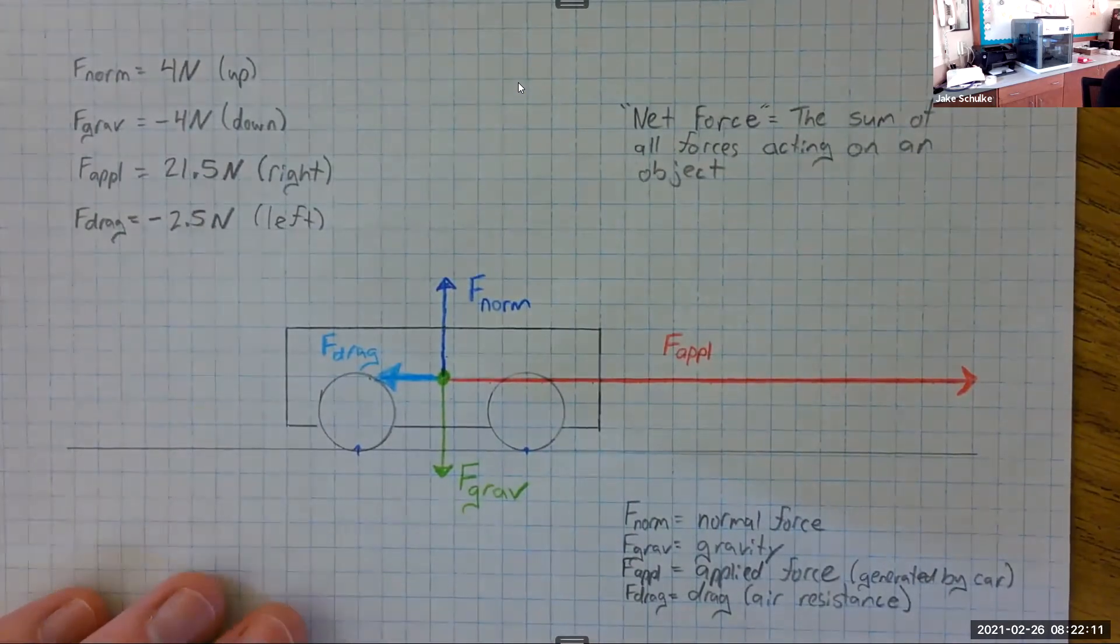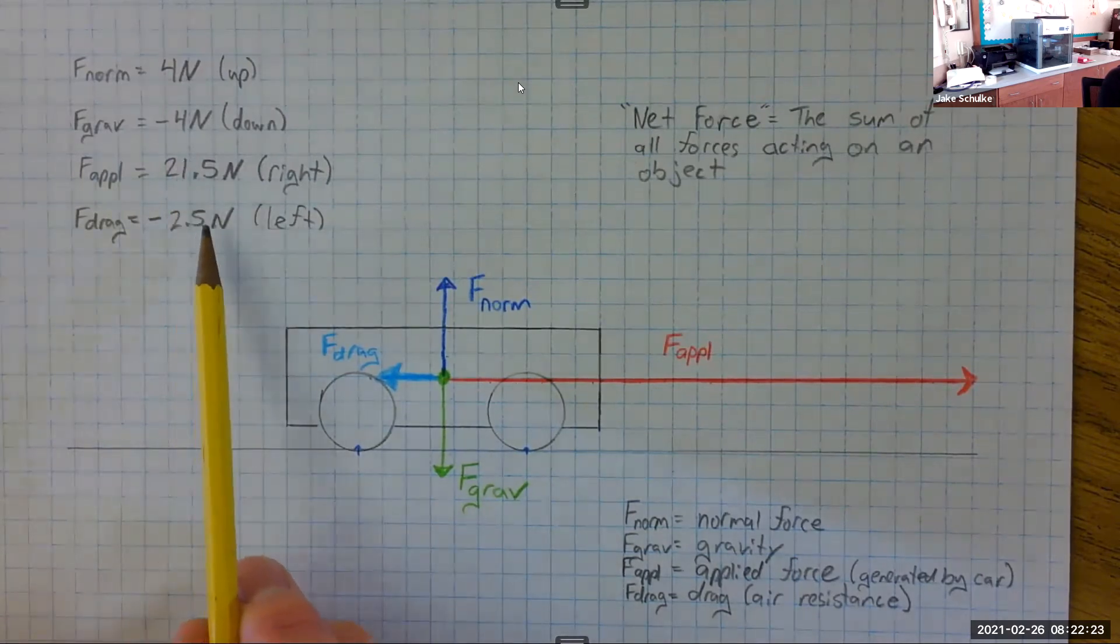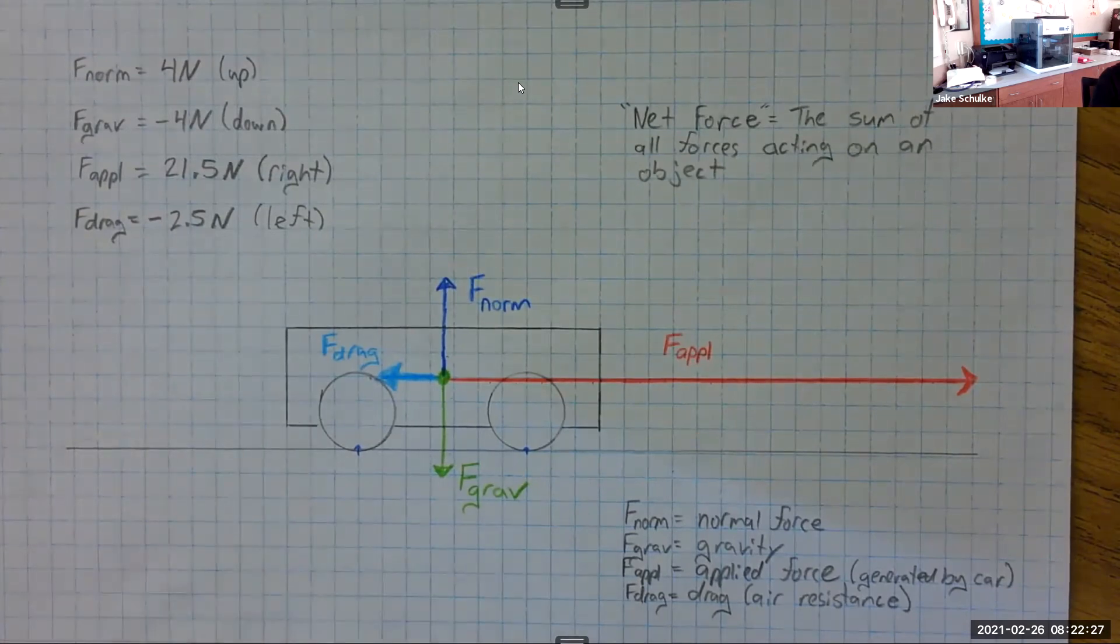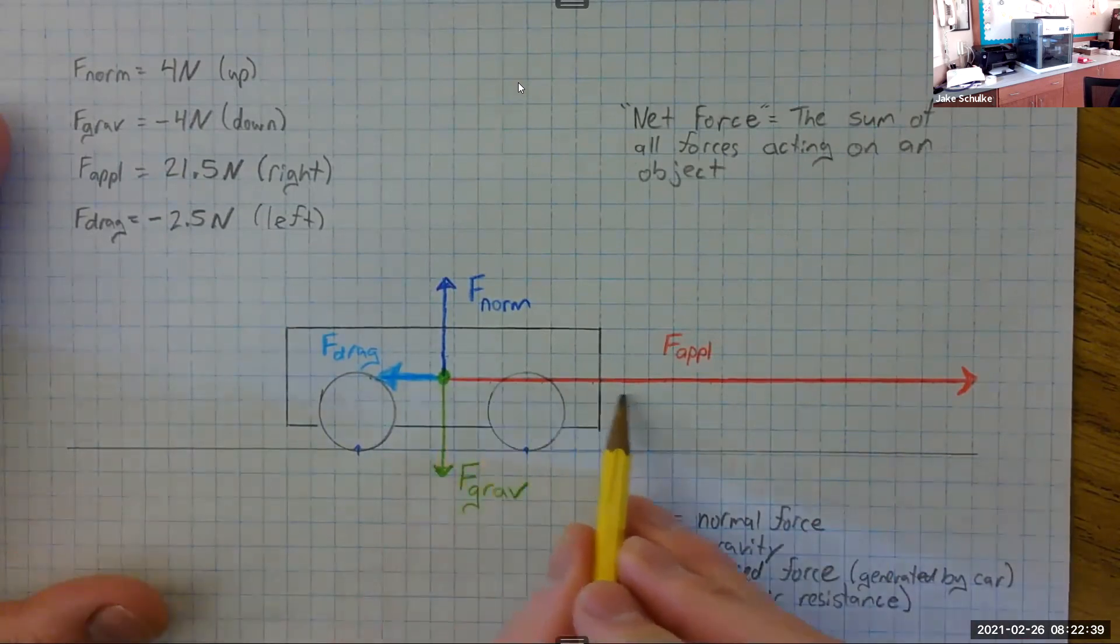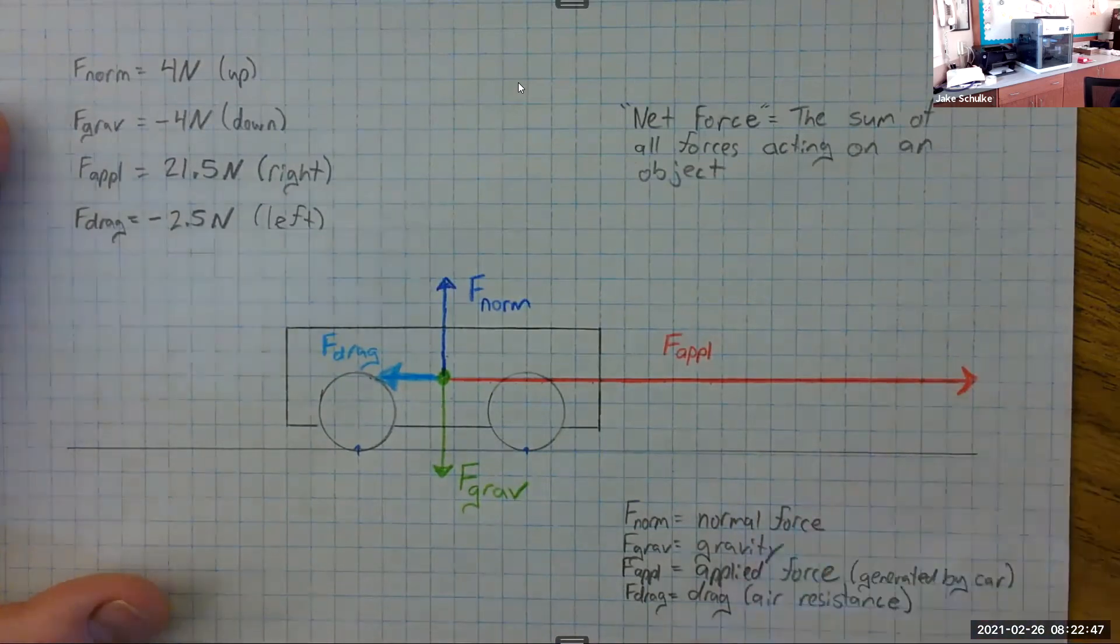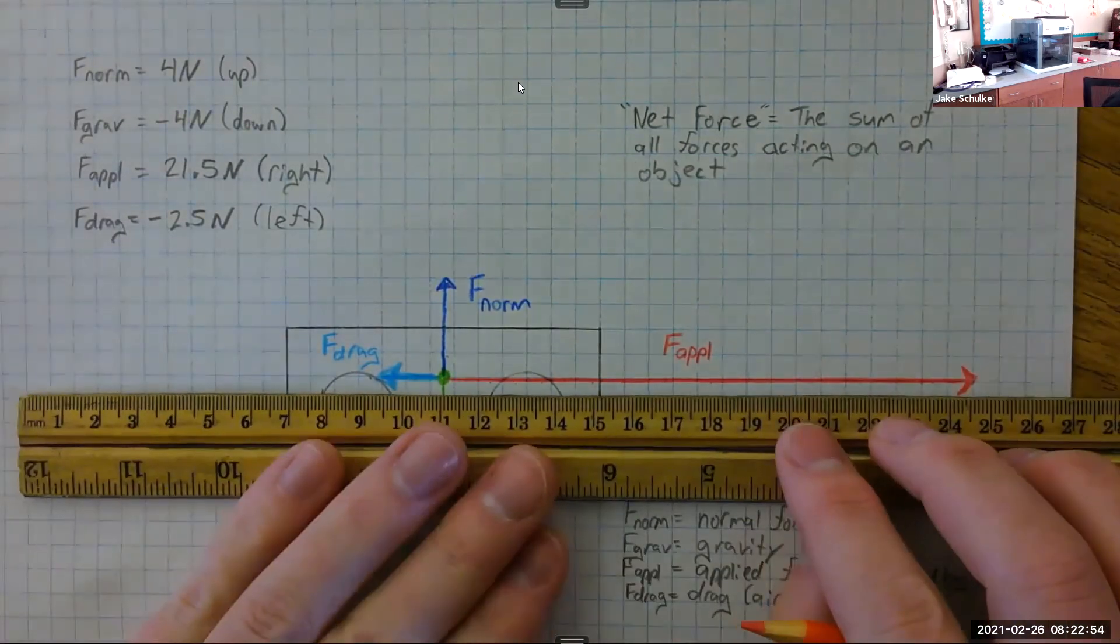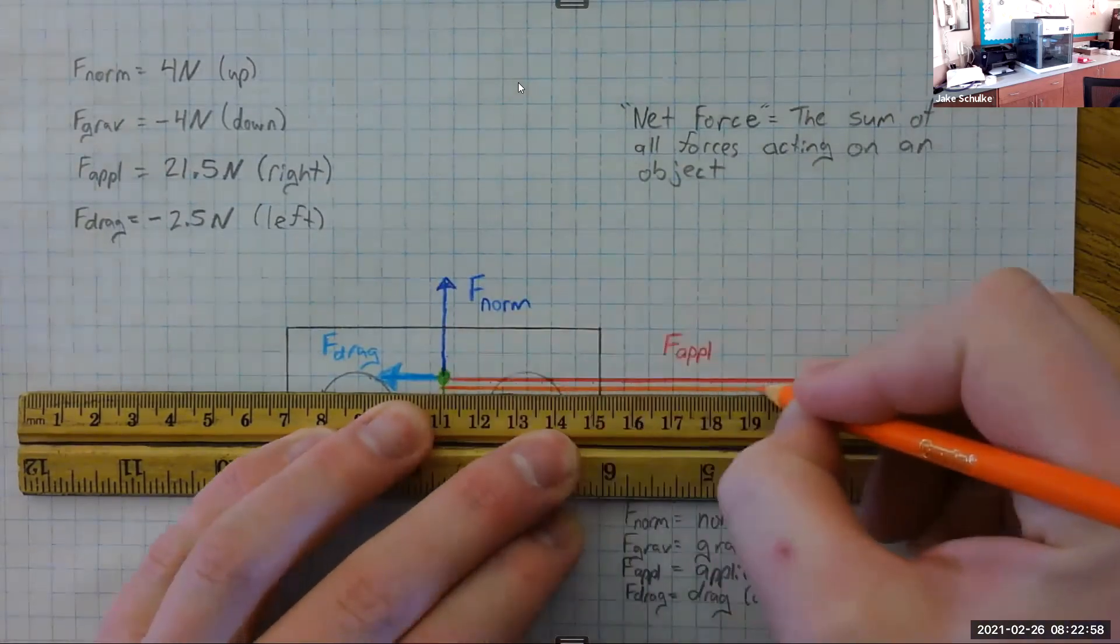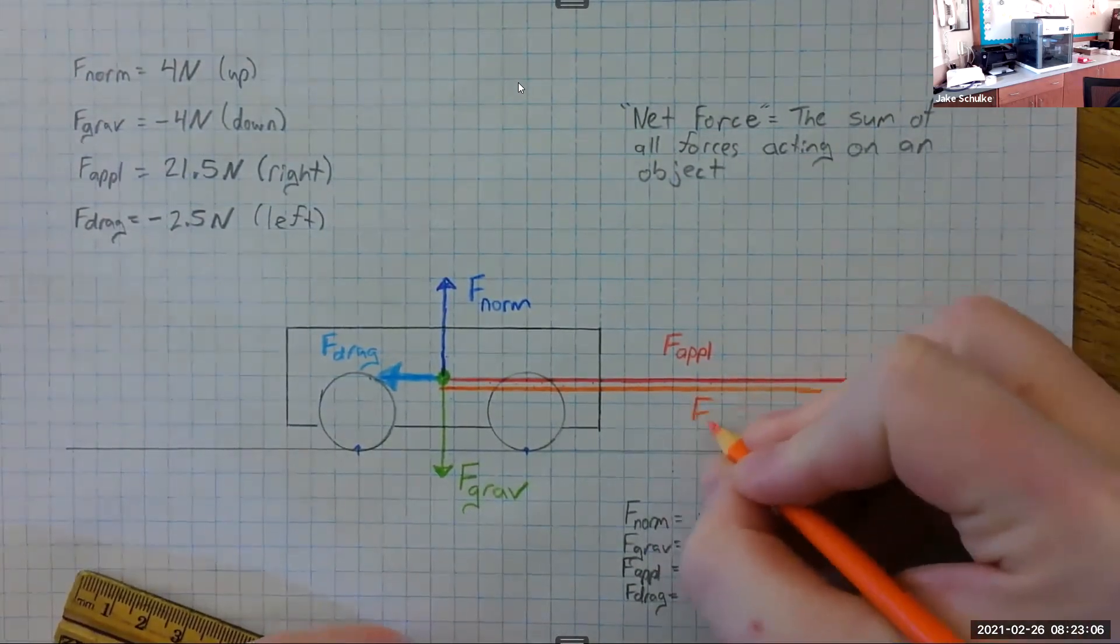So when we add together the right and the left, what do we get? We take 21.5 and add negative 2.5. What does that come out to? 19, exactly. So we know that the net force is going to be going to the right, 19 newtons. So this would be 20.5, 19.5, 19. So our net force, let's make that orange. And that is our F net.